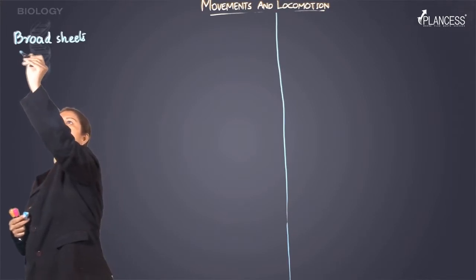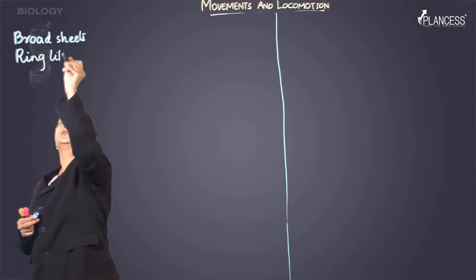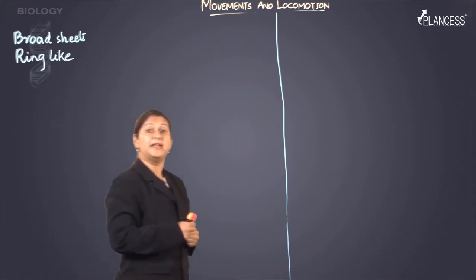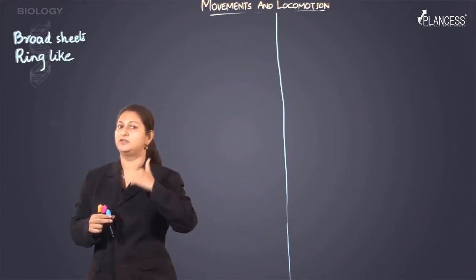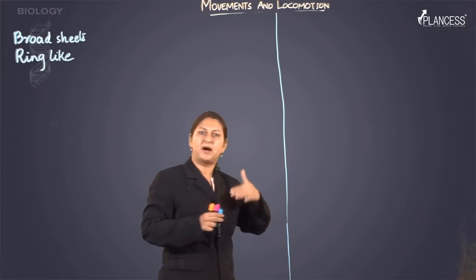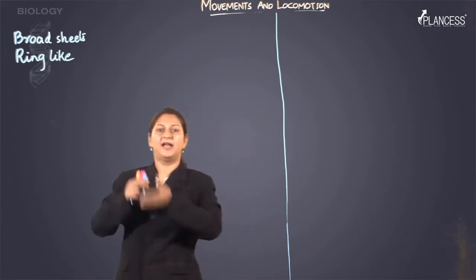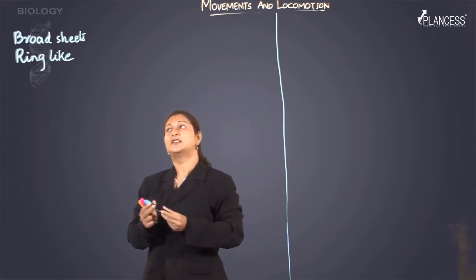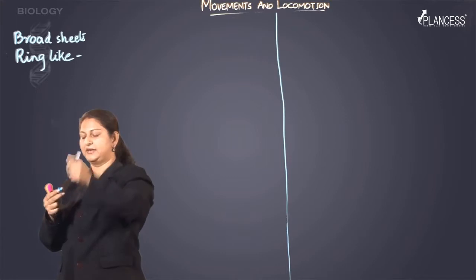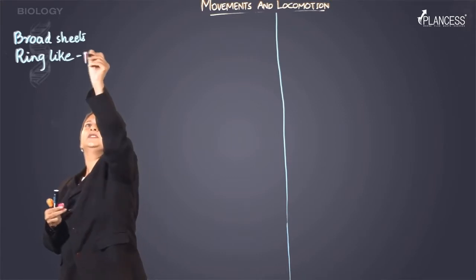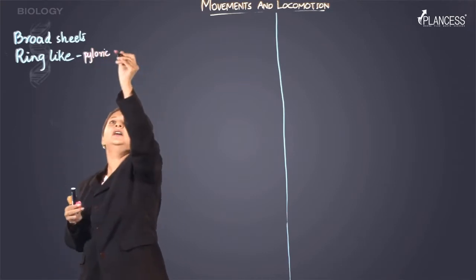The second type of muscle arrangement is ring-like structures. These ring-like structures fit in the human body at the sphincters, which behave like gates. As you eat food, it is allowed to enter the stomach part by part through two different sphincters acting as an entry gate and exit gate. Such places need ring-like muscular structures, for example the pyloric or cardiac sphincter. The pyloric sphincter is the one at the exit gate of the stomach.